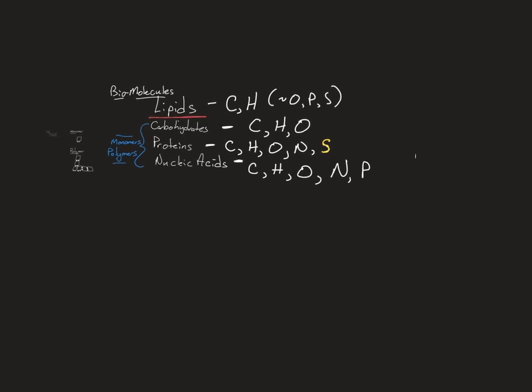So these are the elements that are found, the majority of the elements found in each kind of biomolecule. And there's a very limited number of elements on the periodic table that all life uses repeatedly. Did you write all this down already?